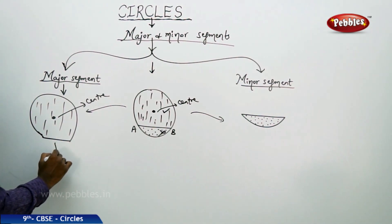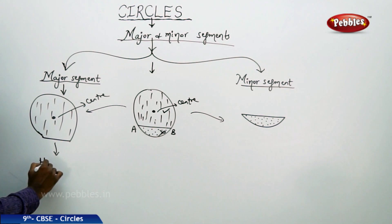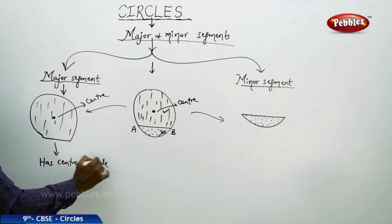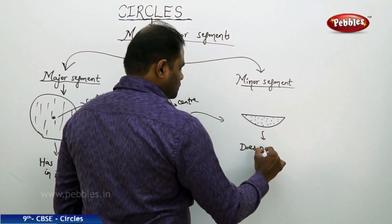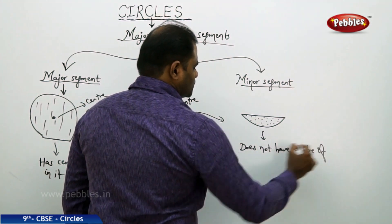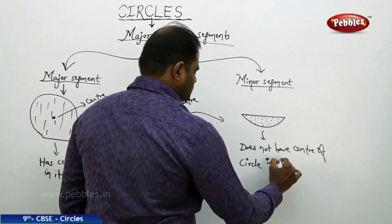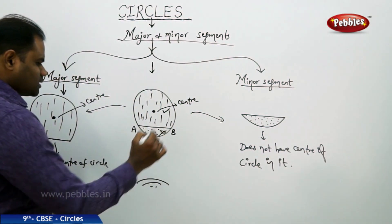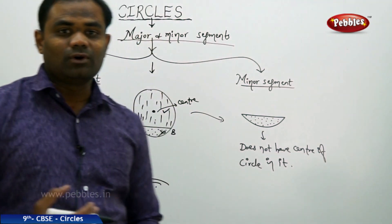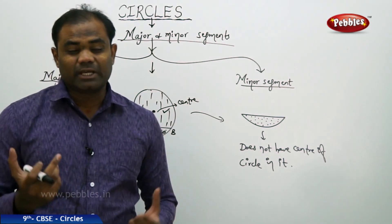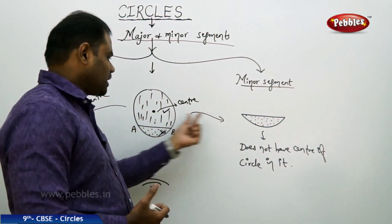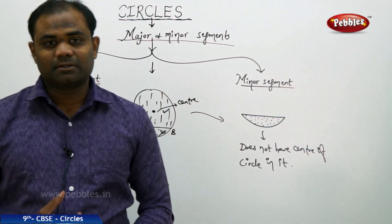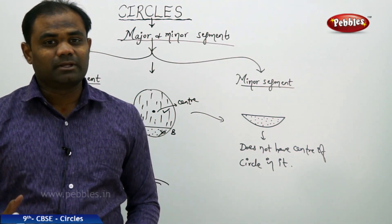To summarize: the major segment is the segment of the circle which has the center of the circle in it, and the minor segment is the segment of the circle which does not have the center of the circle in it. That is how we define major and minor segments for a given circle.